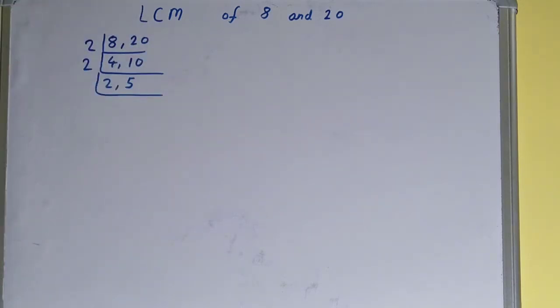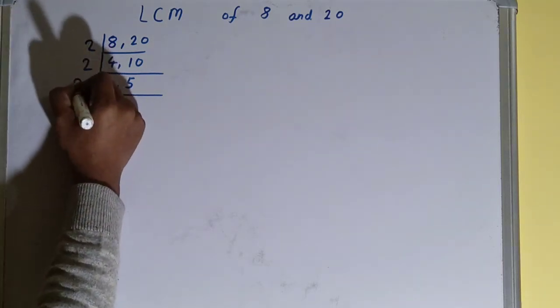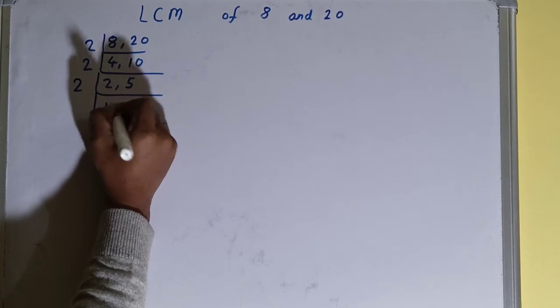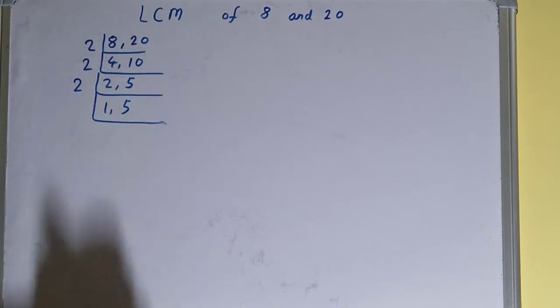Again, if we check, then only the first number is divisible, so we'll divide the first number and the second number will remain the same. This 2 will become 1 and this will remain 5. When the number is not divisible, we just copy that number down.